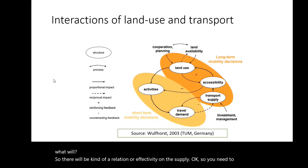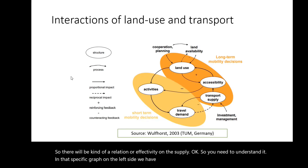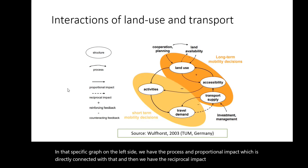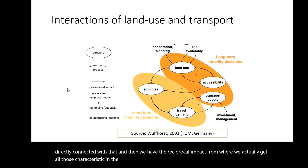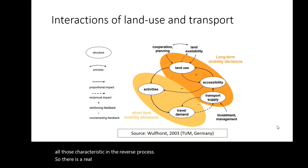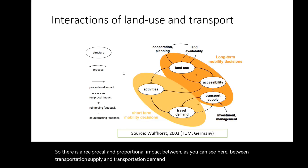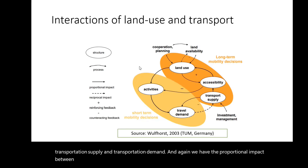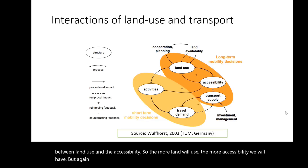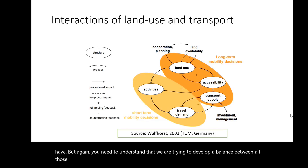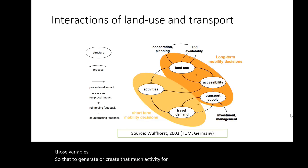On the left side of the graph we have the proportional impact, and then we have the reciprocal impact from where we get all those characteristics in the reverse process. There is a reciprocal and proportional impact between transportation supply and transportation demand, and a proportional impact between land use and accessibility — the more land we use, the more accessibility we will have. We are trying to develop a balance between all those variables.